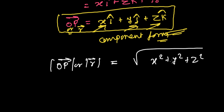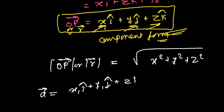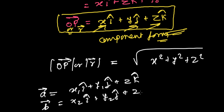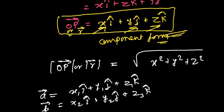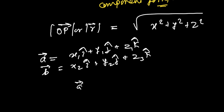Now in this component form, we'll represent vectors like: vector A as x₁î + y₁ĵ + z₁k̂, and vector B as x₂î + y₂ĵ + z₂k̂. In such cases, we'll be learning addition, subtraction, and all those operations — we're going to discuss those in the next video.